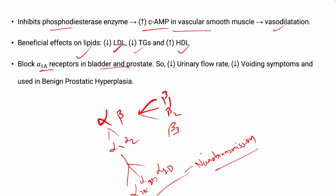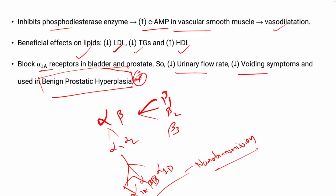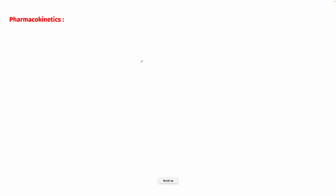Prazosin blocks alpha-1a receptors specifically in the bladder and prostate. As these receptors are blocked, it decreases urinary voiding symptoms and therefore it is used in benign prostatic hyperplasia (BPH). Most of these alpha-blocker drugs will be used in BPH.